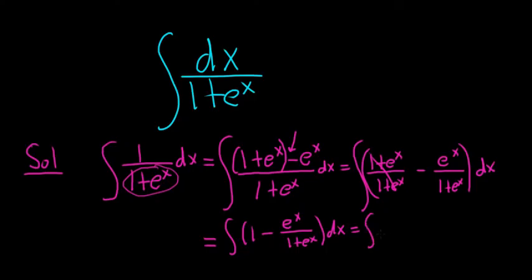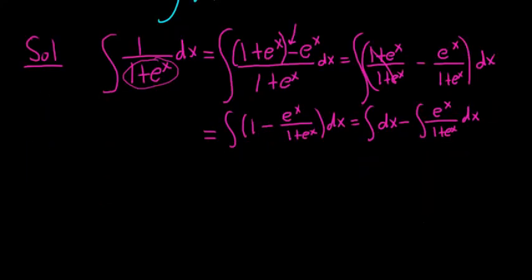Now you break it up. It's dx minus the integral of e to the x over 1 plus e to the x dx. All right, so now we can make a u sub on the second integral here.